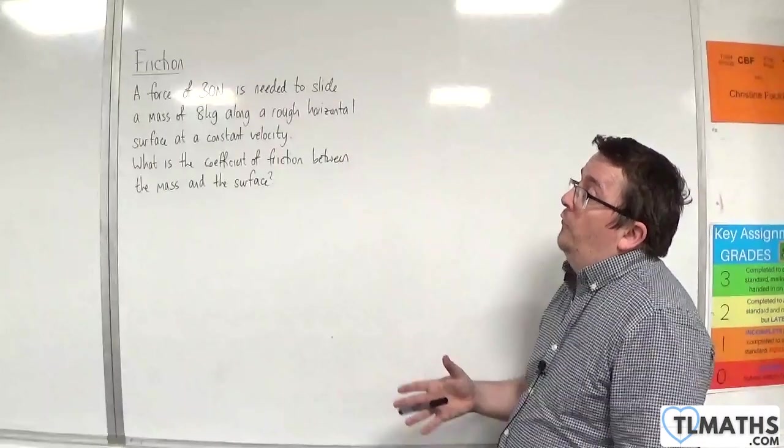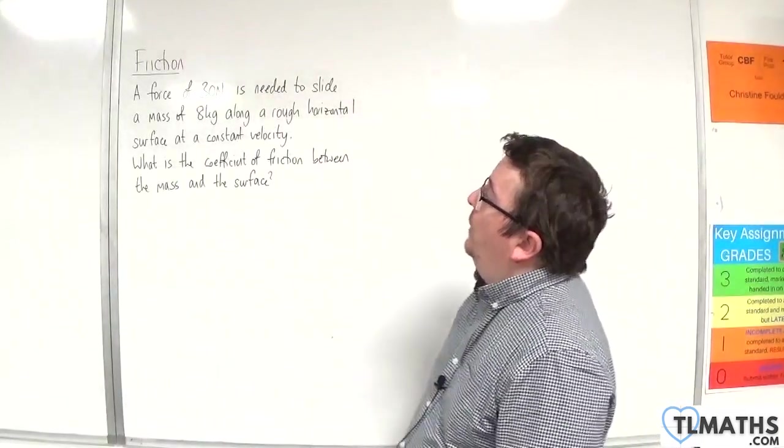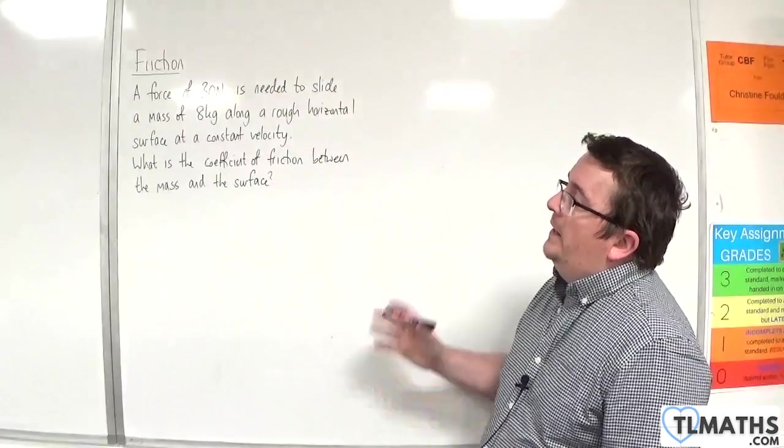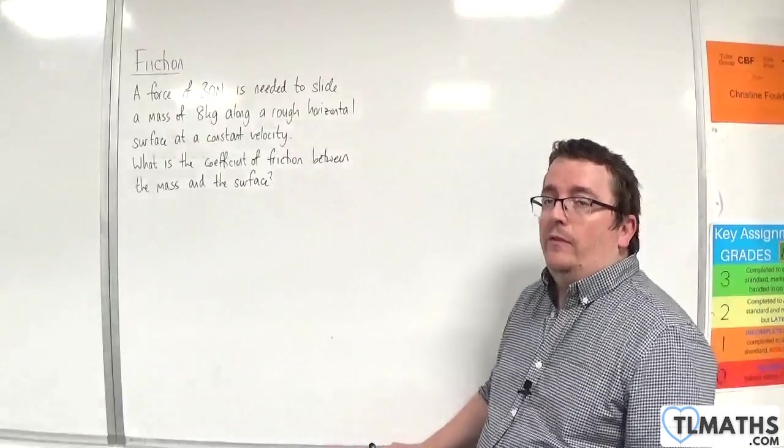In this video, a force of 30 newtons is needed to slide a mass of 8 kilos along a rough horizontal surface at a constant velocity. What is the coefficient of friction between the mass and the surface?